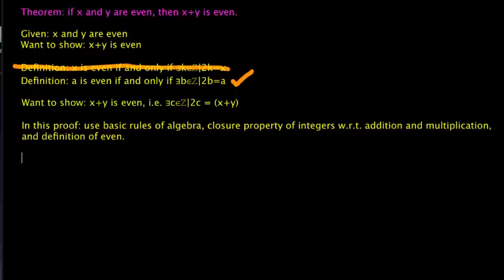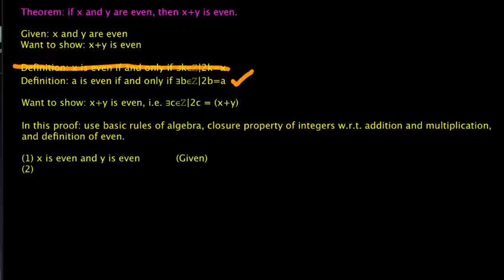So here's how we set it up. Step one, we simply restate our given: x is even and y is even. Justification: given. Step two, we restate this in terms of our definition. Our definition says: a is even if and only if there exists a b in ℤ such that 2b equals a.